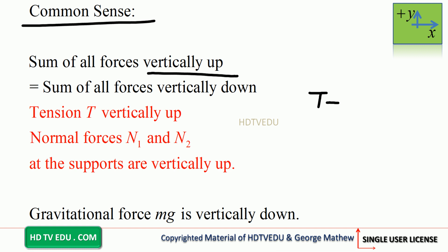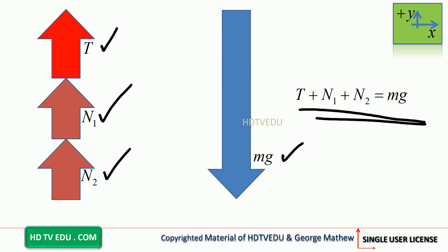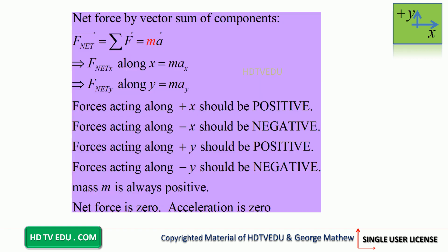By common sense, the sum of all forces vertically up should equal the sum of all forces vertically down. Tension T is vertically up, normal forces N1 and N2 are vertically up, and gravitational force is vertically down. So T plus N1 plus N2 should equal mass times acceleration due to gravity. The lengths of those three upward force arrows should add up to exactly equal the gravitational force arrow, confirming force up equals force down.